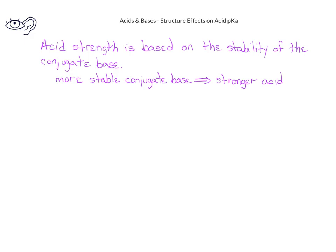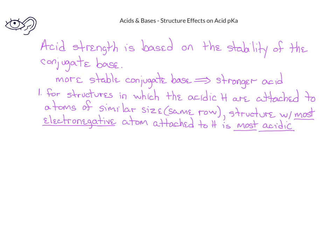There are two different situations that we need to consider. For acids that have similar structures, similar in size, the most acidic hydrogen will be the one that's attached to the most electronegative atom. The more electronegative atom can more easily support the negative charge once the conjugate bases are formed.